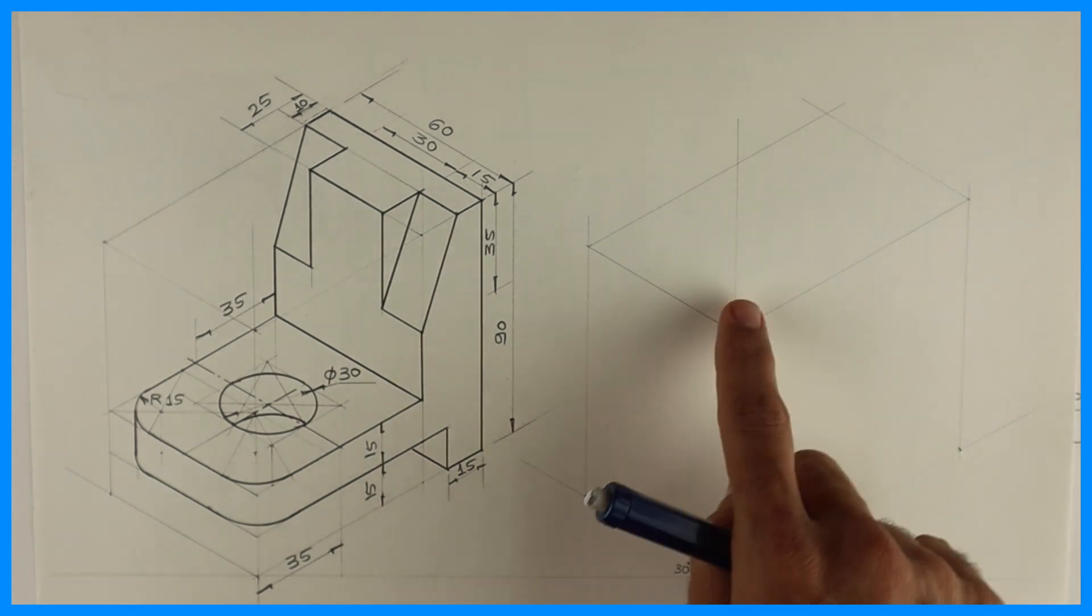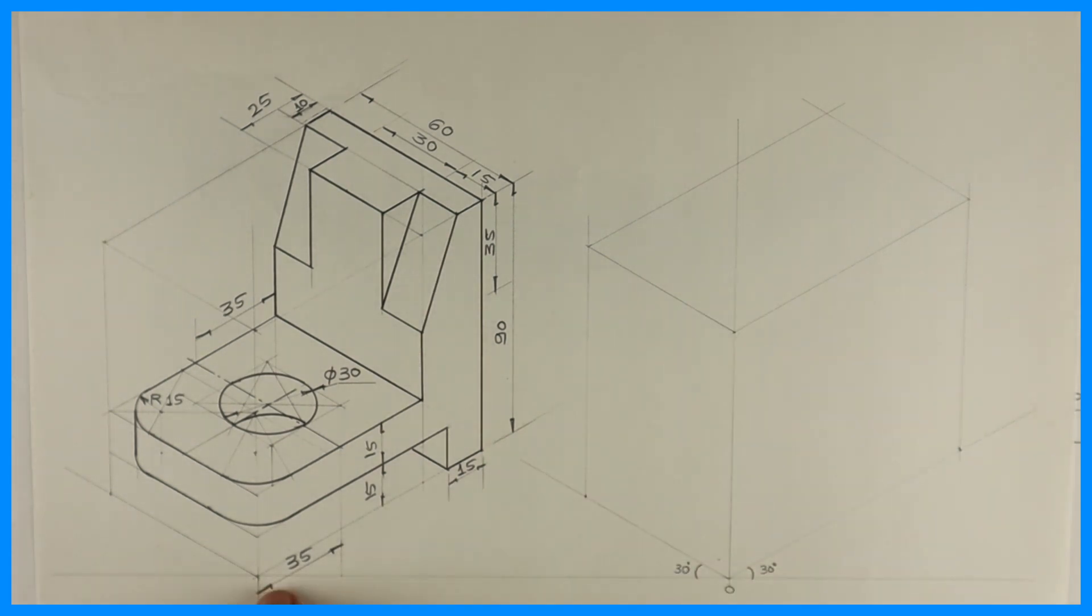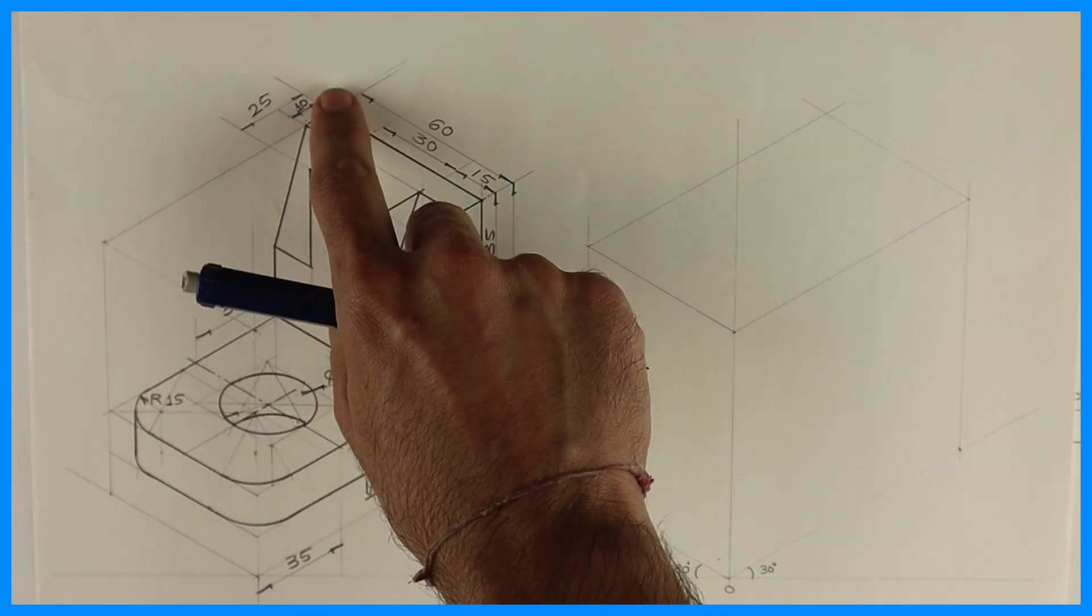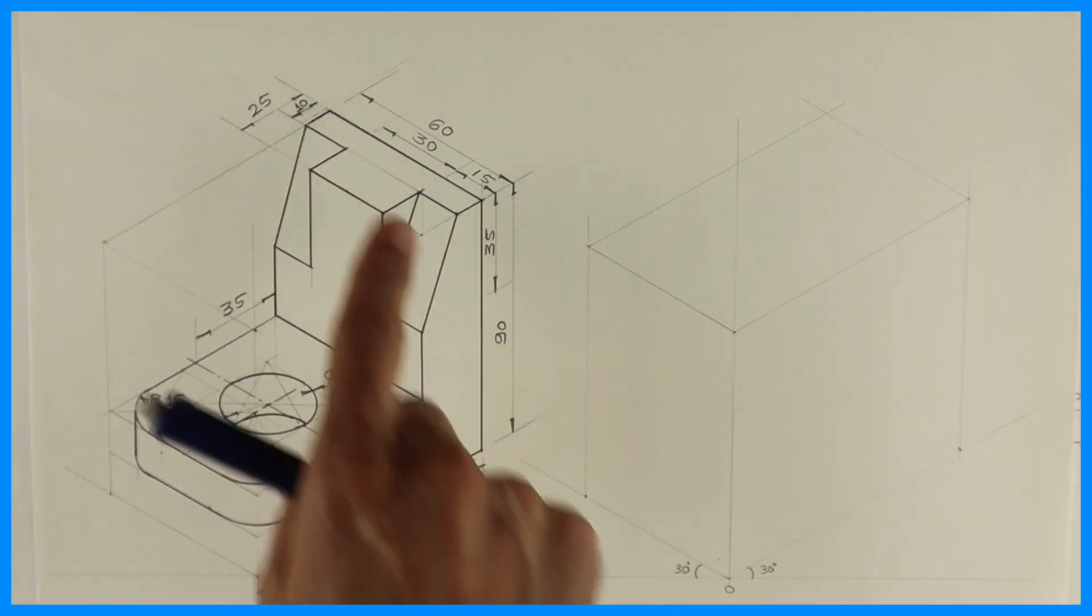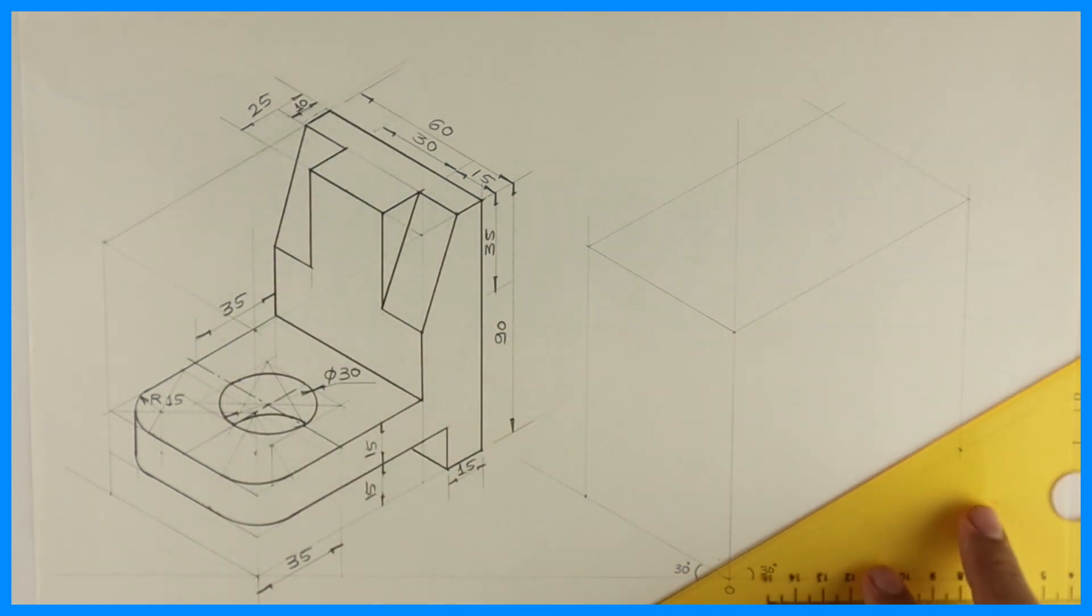If you see, length is here, height, width. So first we will start with length. So 35 plus 35 plus 25, it would be 95. Height is 90 and width is 60. So first we will draw layout.